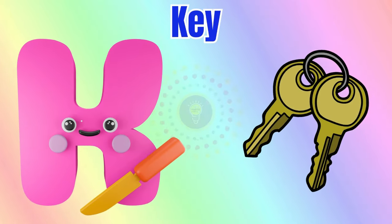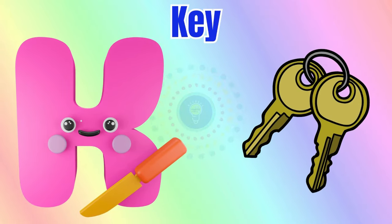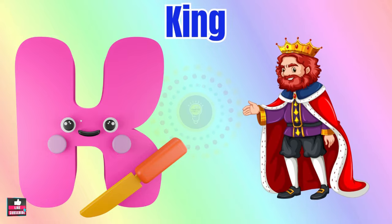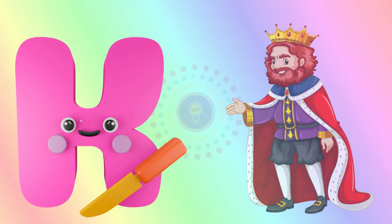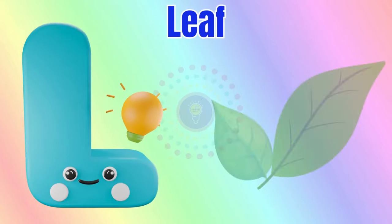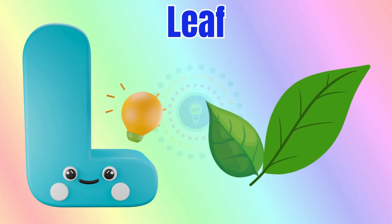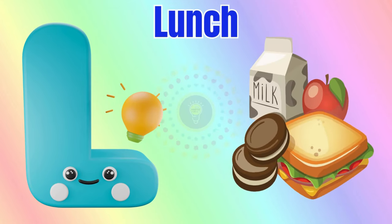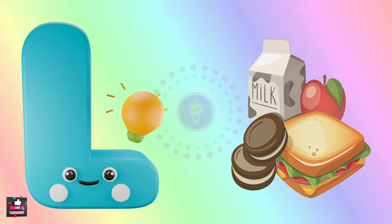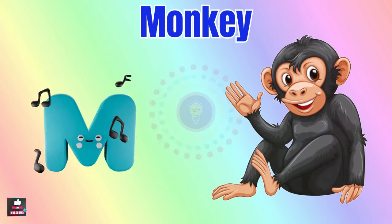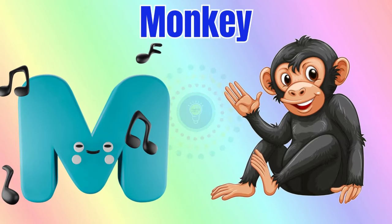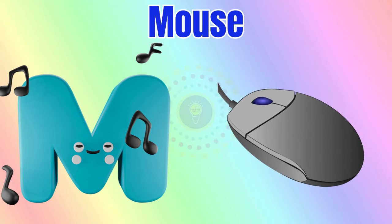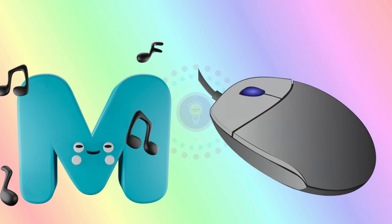K is for key, k-k-key. K is for king, k-k-king. L is for leaf, l-l-leaf. L is for lunch, l-l-lunch. M is for monkey, m-m-monkey. M is for mouse, m-m-mouse.